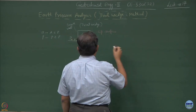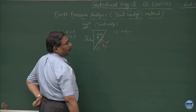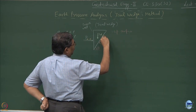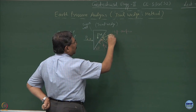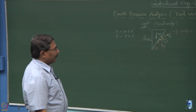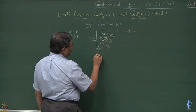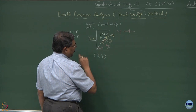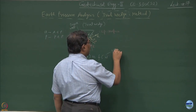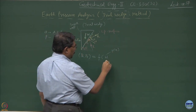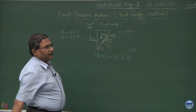I drew the earth pressure for the passive case. In the passive case, the direction of the shear force will be changing, and then you have the normal which is acting, and this is the resultant. Once you have done the free body diagram, life is not so difficult. The principal unknown is PA or PP, and this is a function of the weight of the block, and weight is a function of the height of the wall. The objective is to bring in the theta component.